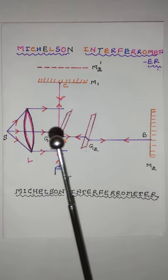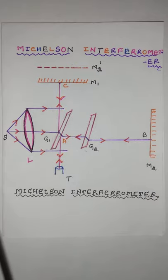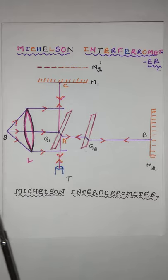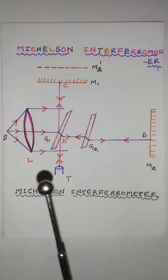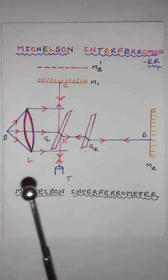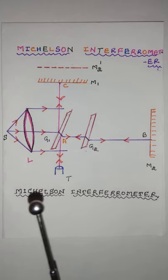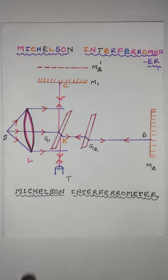When monochromatic light is replaced by white light, the central fringe will be dark and the others will be colored with white light. The fringes are observed only when the path difference is small. These fringes are important because they are used to locate the position of zero path difference.